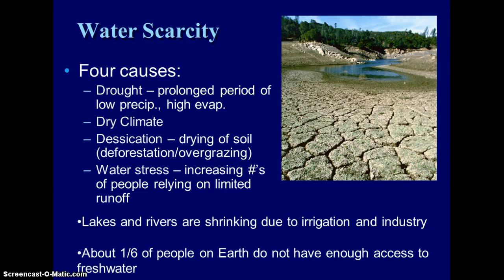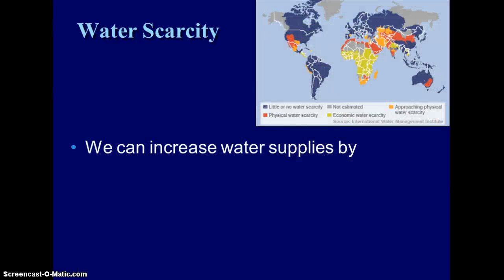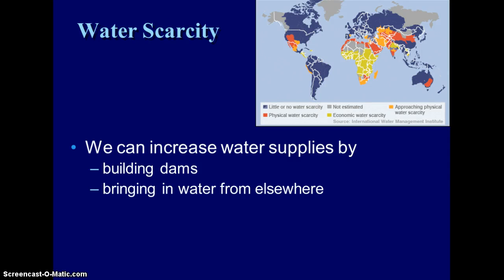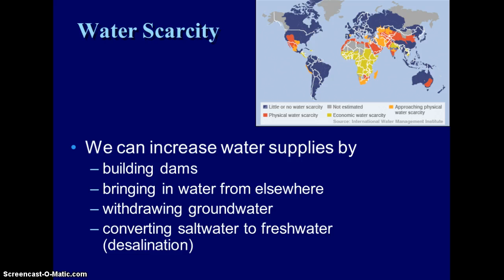As a result of water scarcity, about one-sixth of the people on earth don't have enough access to fresh water. When we think about seven billion people, one-sixth of seven billion is a pretty significant number. There are ways that we can increase our water supply. We can build a dam, which might create problems downstream but can create water in an area that needs it. We can bring in water from elsewhere, withdraw groundwater, or convert salt water to fresh water using desalination, which is expensive but is done in certain parts of the world.